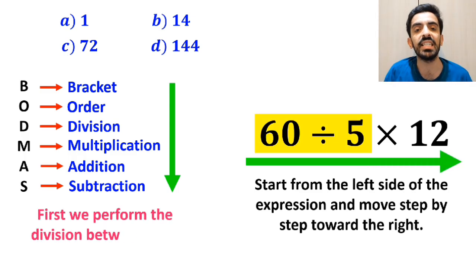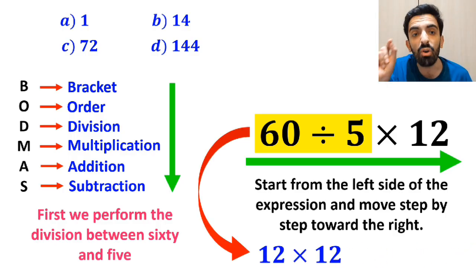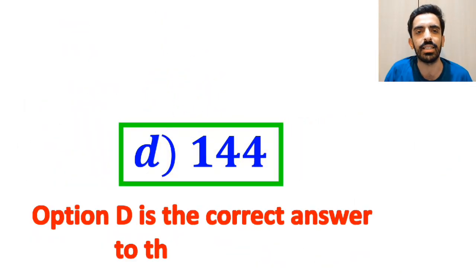So, first we perform the division between 60 and 5, which simplifies the expression to 12 multiplied by 12. Finally, the value of this expression will be 144. Therefore, option D is the correct answer to this question.